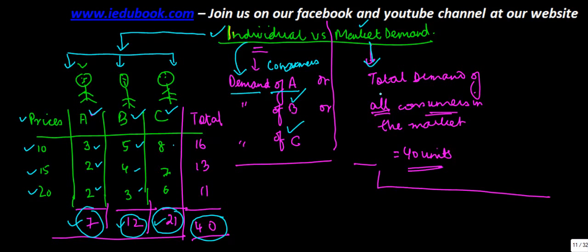When we talk about market demand, what you mean is the total demand of all the consumers in the market, which in this case is 40 units. So the difference is that with individual demand, you look at what quantity each individual is demanding at different prices over a period of time - let's say this was January, this was February, this was March.